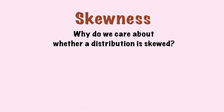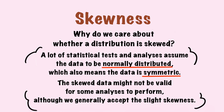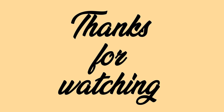Why do we care about skewness? A lot of statistical tests assume the data to be normally distributed, and normal distribution is a type of symmetric distribution. Skewed data doesn't meet this assumption and may not be valid for some analyses. However, we typically accept slight skewness, since a small degree of bias is tolerable. We can compare the mean, median, and mode to know whether a distribution is roughly symmetric, while there are also mathematical methods to calculate skewness. That's the basic idea about central tendency and skewness — hope you enjoyed today's video, and see you next time!